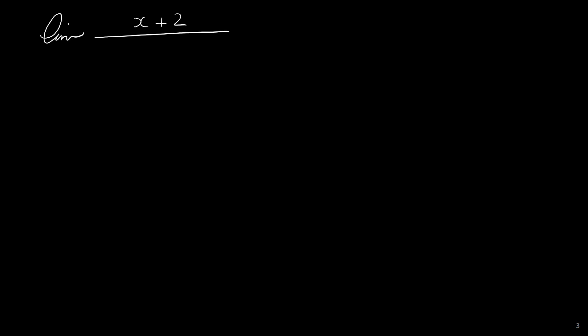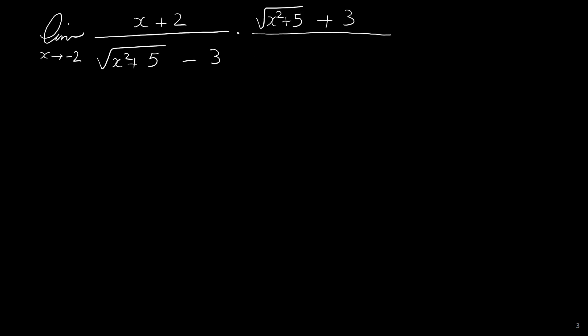Now let's find the limit of x plus 2 over radical x squared plus 5 minus 3, as x goes to negative 2. If you plug in negative 2 in the top and bottom you get 0 over 0, which is an indeterminate form. So direct substitution doesn't work for finding this limit. We have to multiply top and the bottom by the conjugate of the denominator to get rid of the radical in the denominator, which is radical x squared plus 5 plus 3.